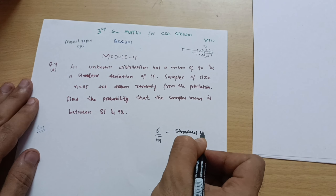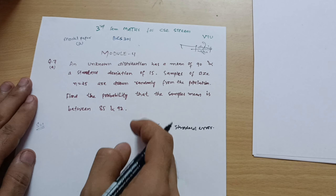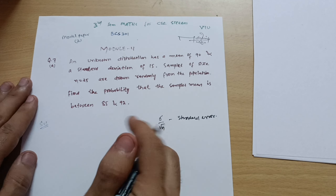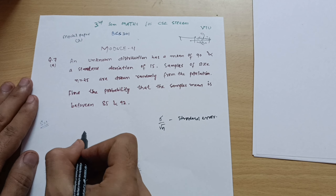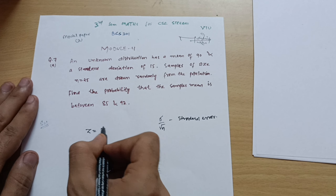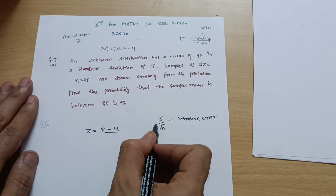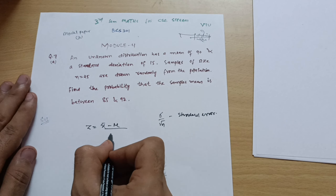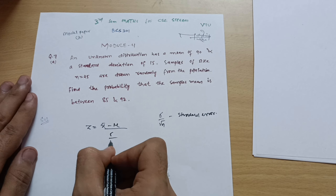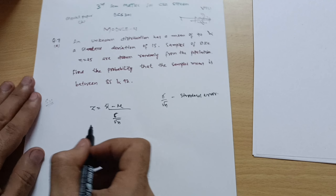This is called the standard error, and we use it in the formula. The formula is: z = (x̄ − μ) / (σ/√n).